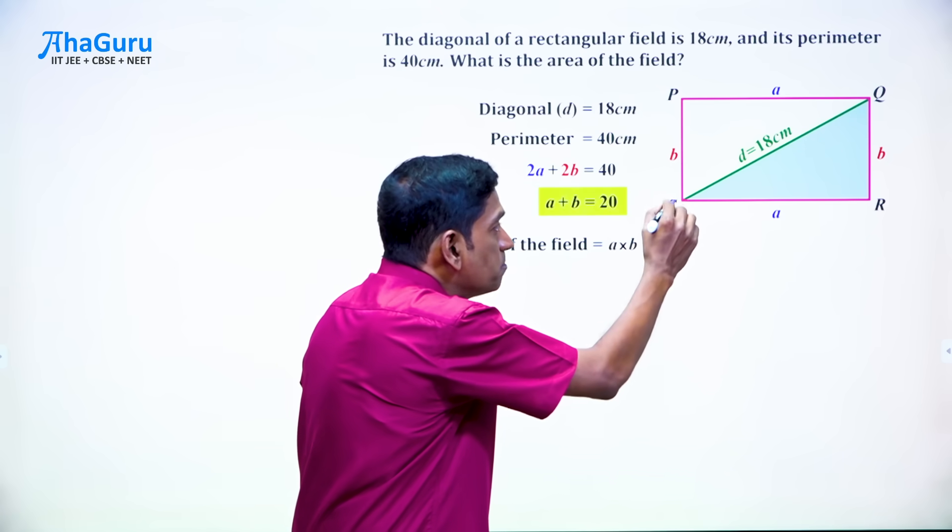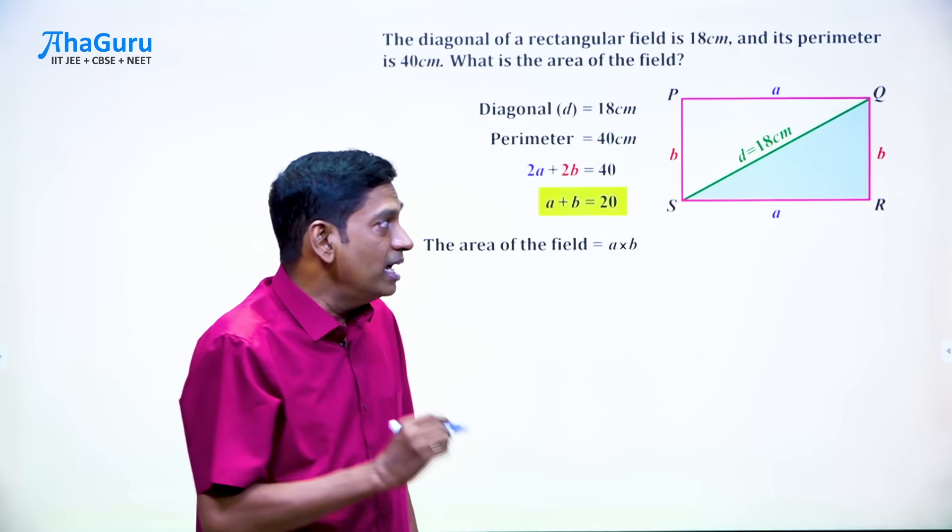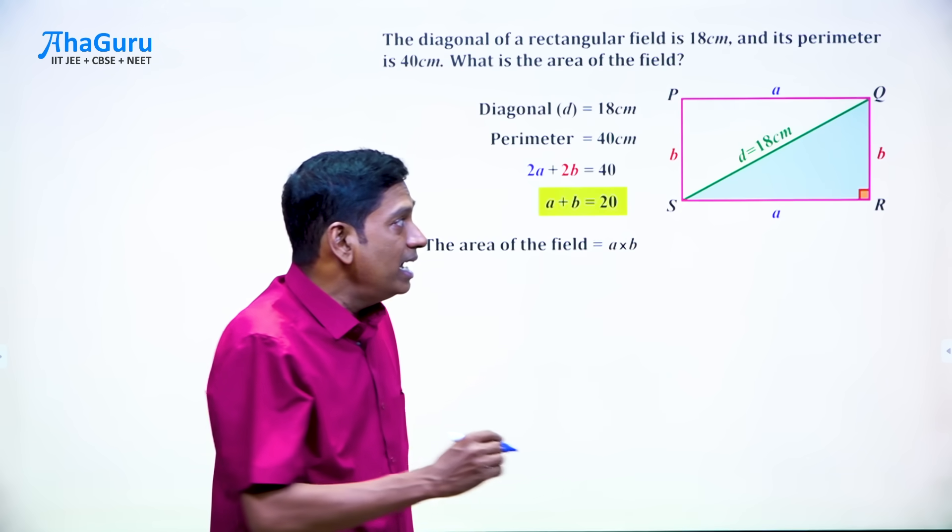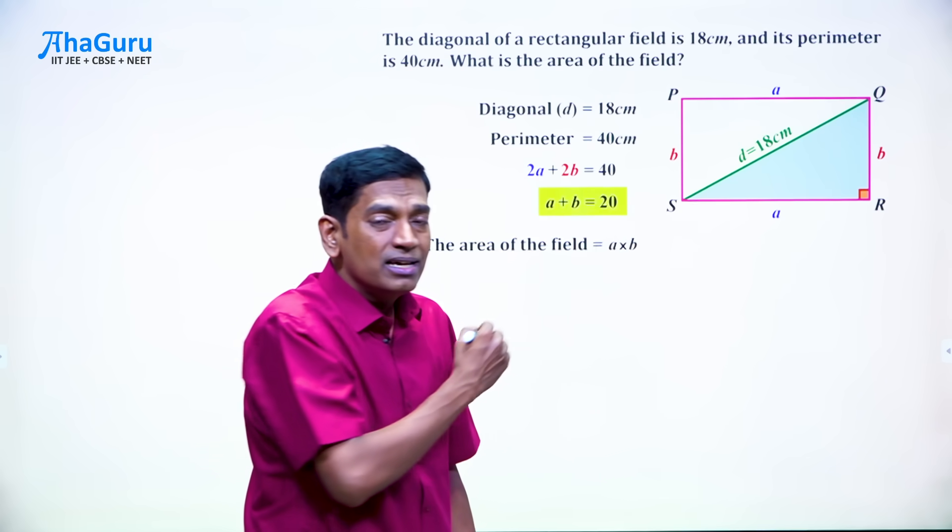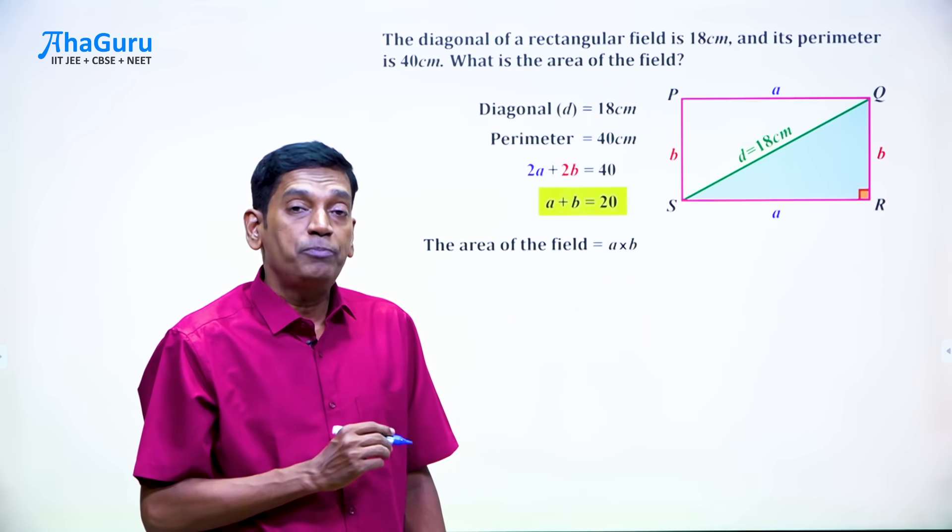Well, this is part of the rectangle and in the rectangle, all four angles are 90 degrees. Therefore, we can say that angle R is 90 degrees and in a triangle, if one angle is 90 degrees, it's a right angle triangle, that Pythagoras theorem will apply.